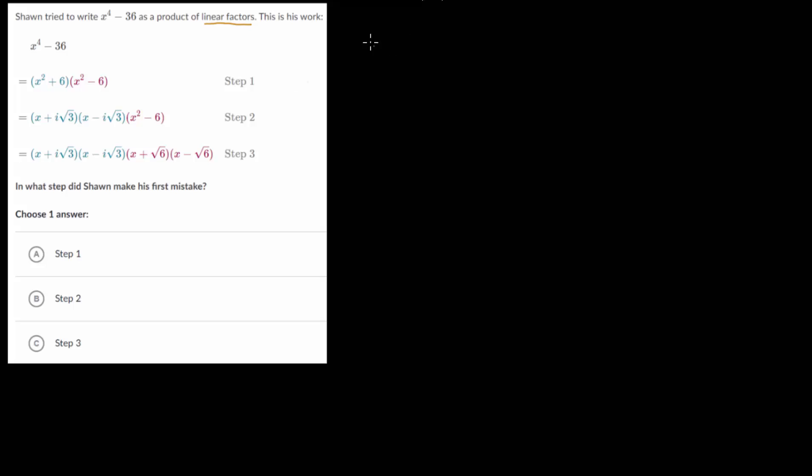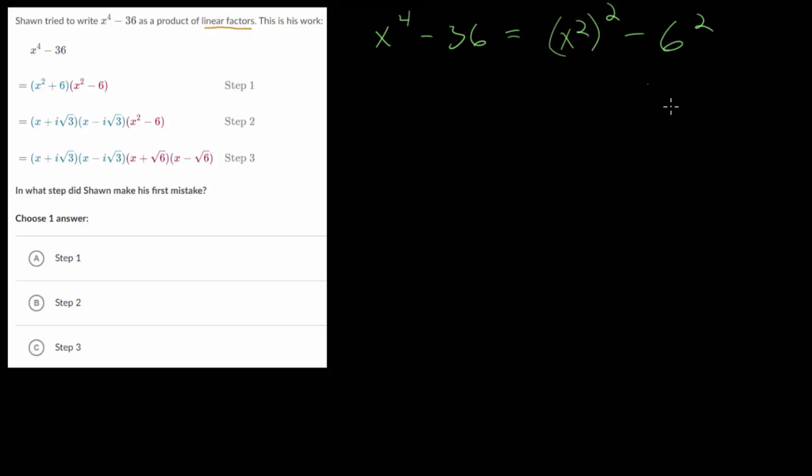So we will start by rewriting x to the fourth minus 36. And you can notice that this is actually a difference of two squares. In fact, if we rewrite it as x squared squared minus six squared, it becomes a little bit more clear.